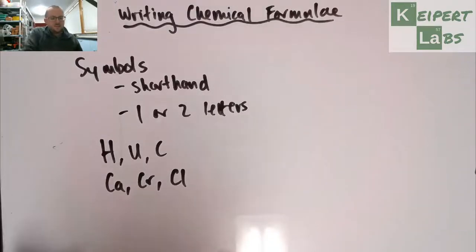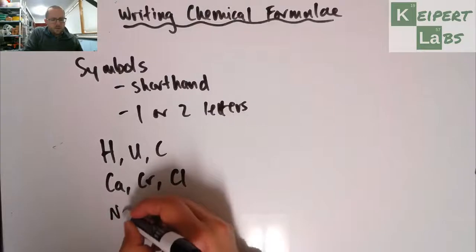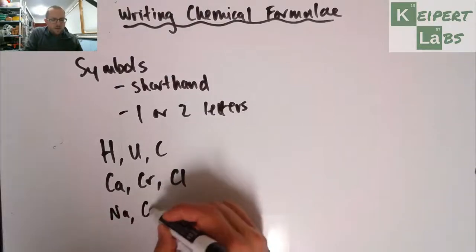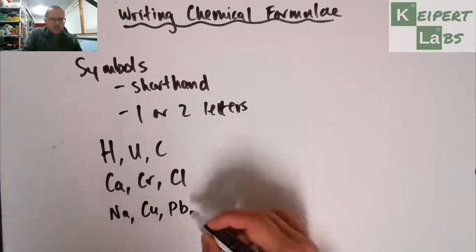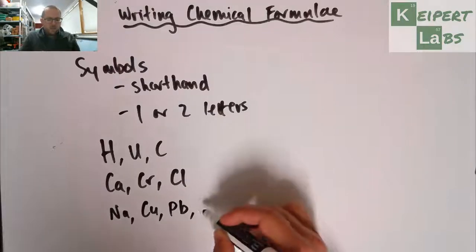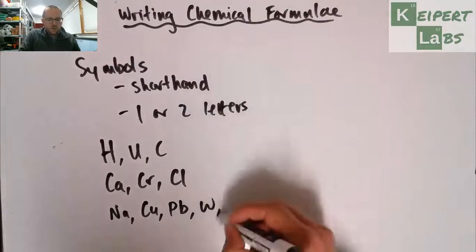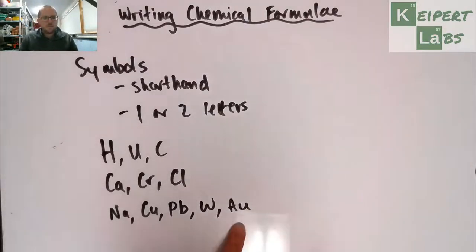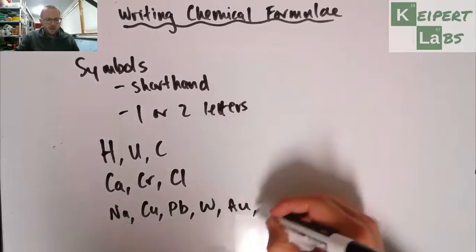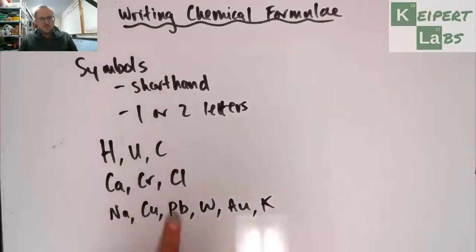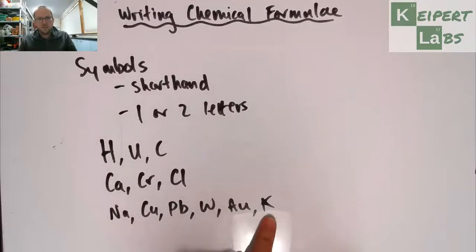Okay. And then we get to other ones, which are more complicated, where their symbol doesn't seem to have any bearing or relationship to their name. Okay. And so we get Na, Cu, Pb, W, Au, and K. But this is for sodium, copper, lead, tungsten, gold, and potassium, respectively. And part of the reason for that is that the names that we currently have for these elements is not always where they were known.